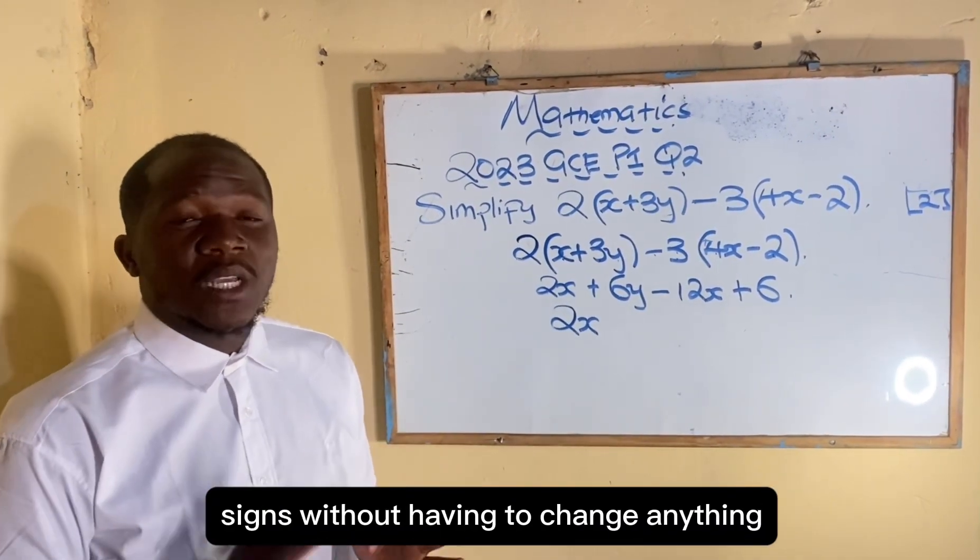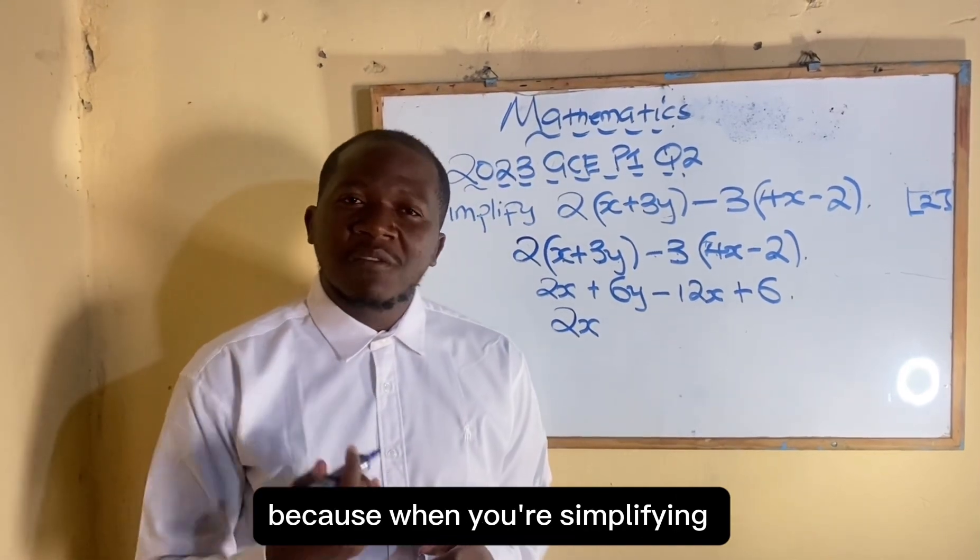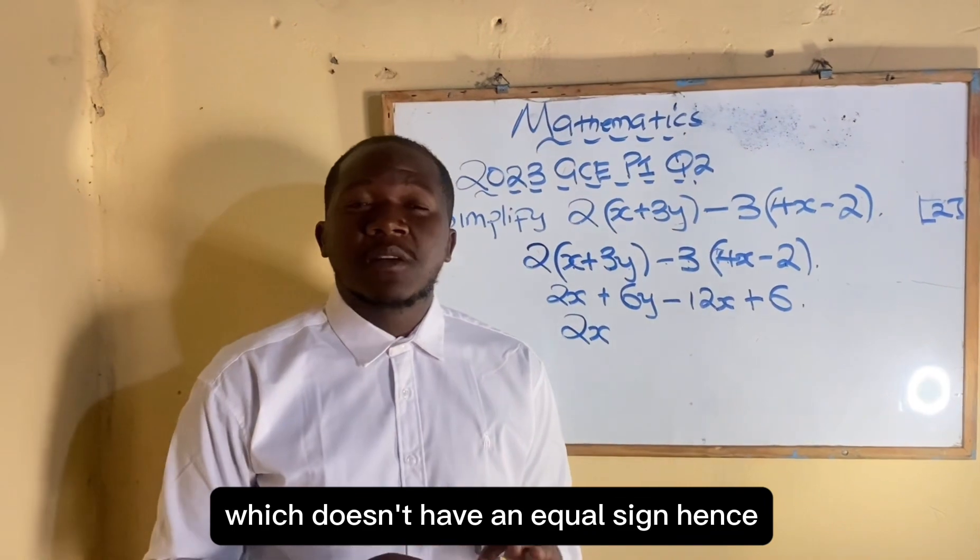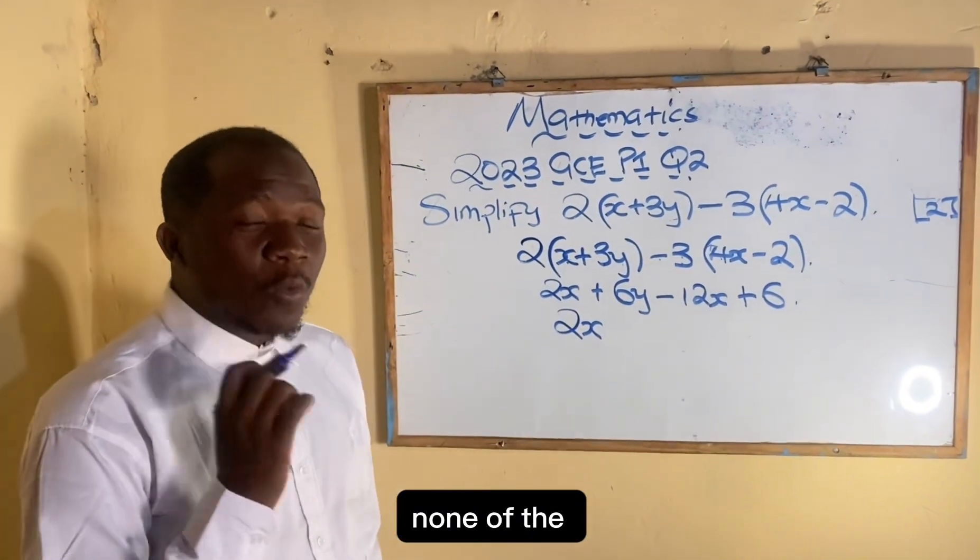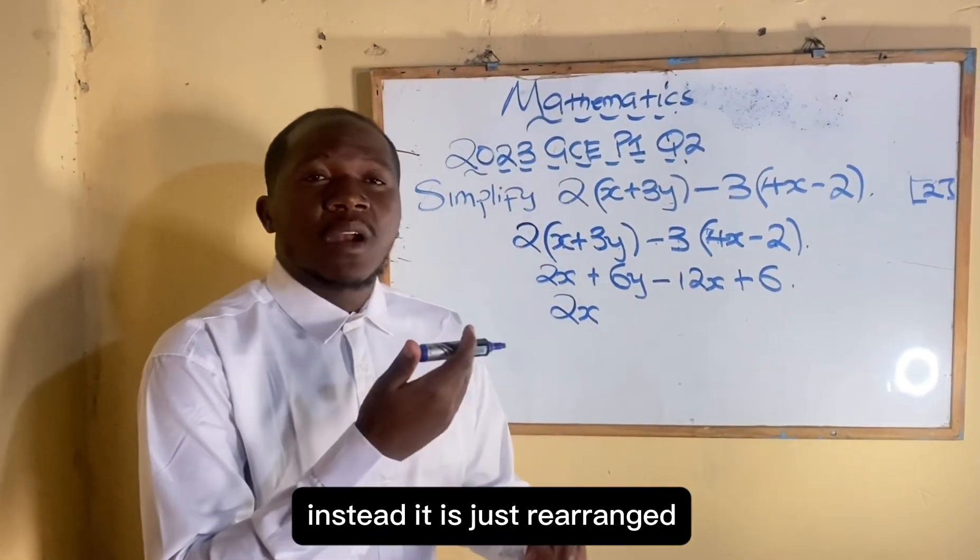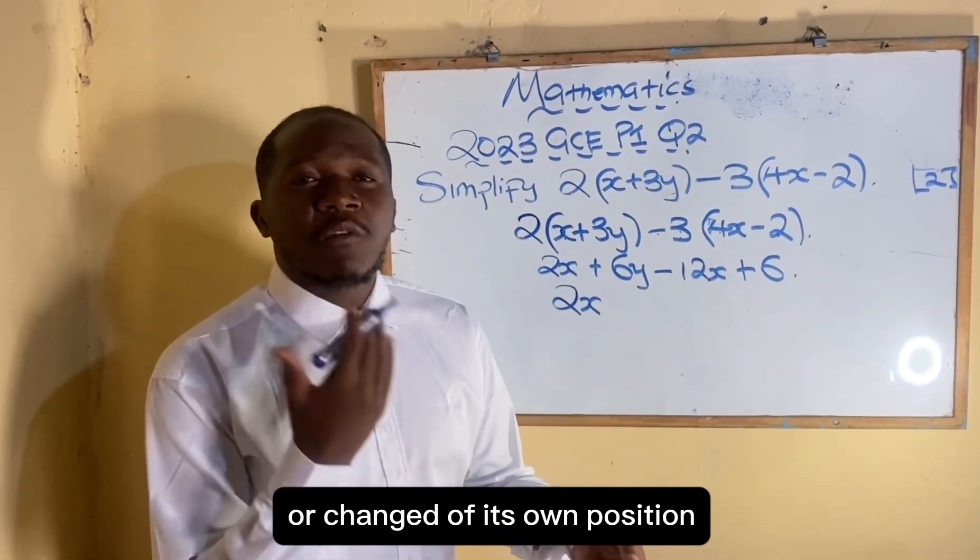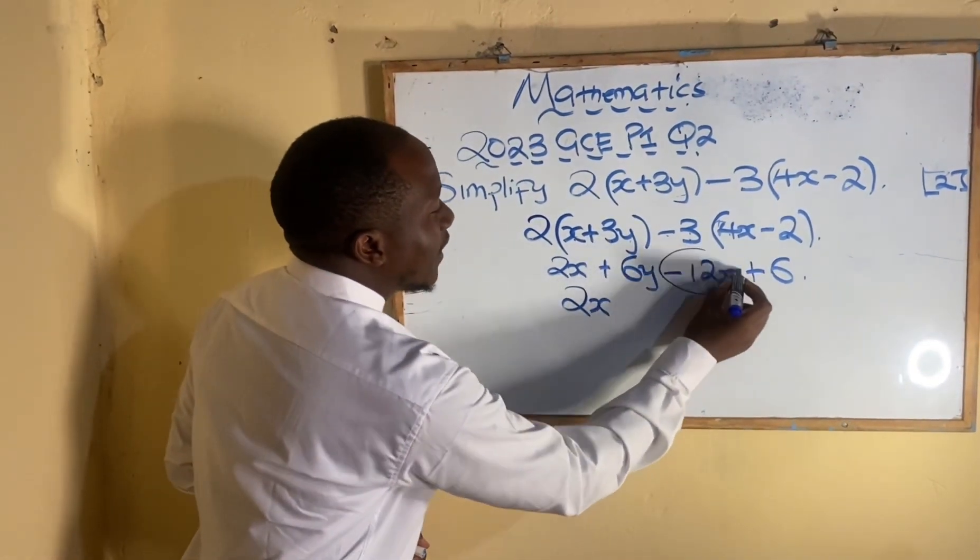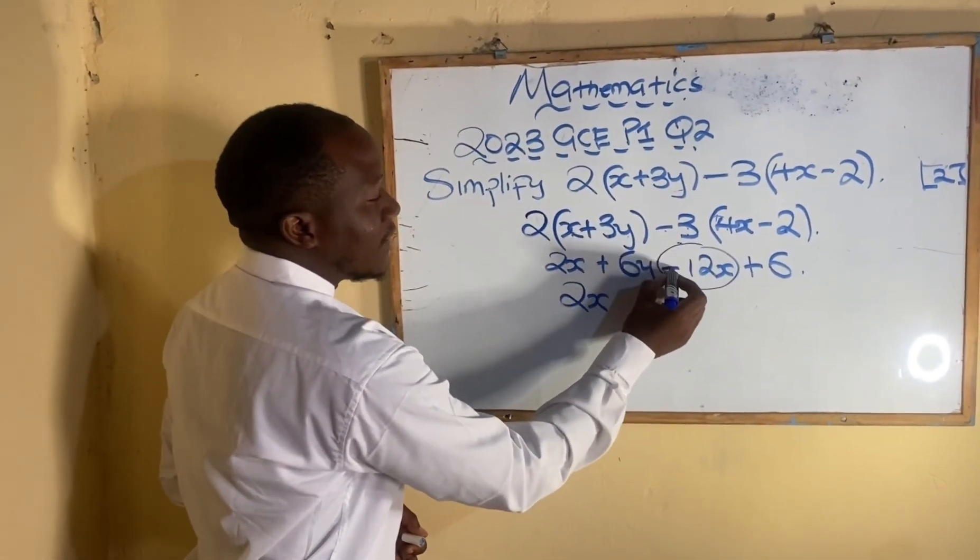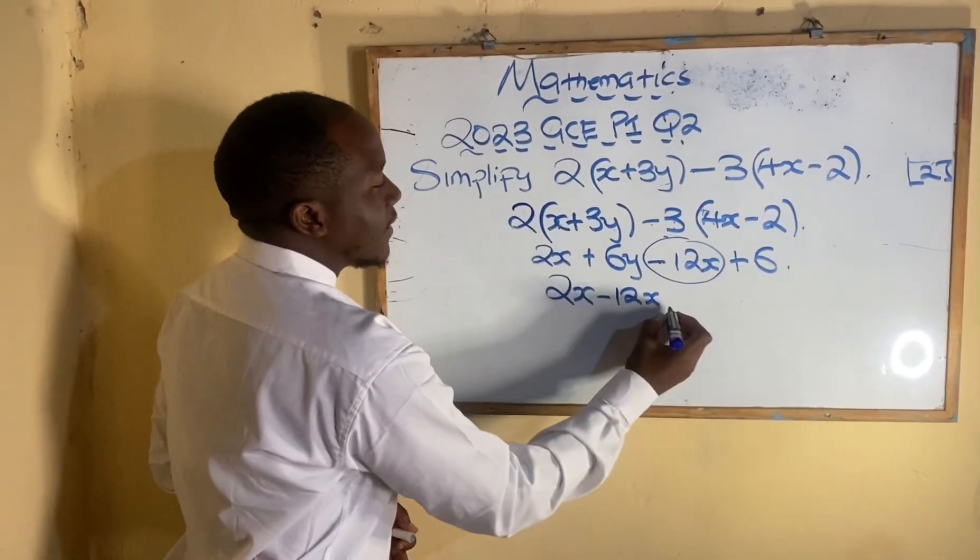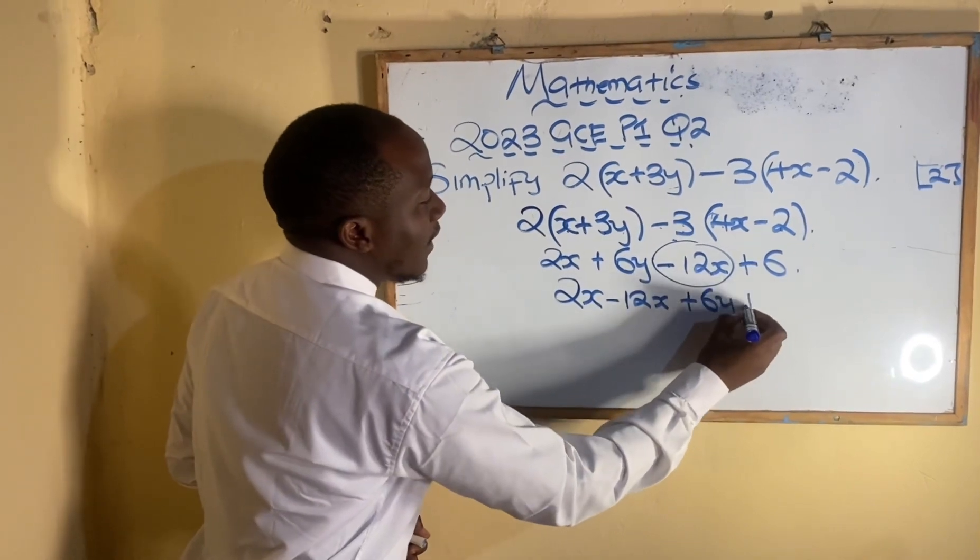So I'm going to say this is 2x. When grouping like things, it's more like we are rearranging with their original signs without having to change anything. Because when you simplify you are going to obtain an expression which doesn't have an equal sign, hence none of the terms in the expression should change its sign. Instead it is just rearranged or changed of its own position. So 2x and then when we pick -12x we have to pick together with that negative, so minus 12x, then I'm going to say plus 6y and then plus 6.